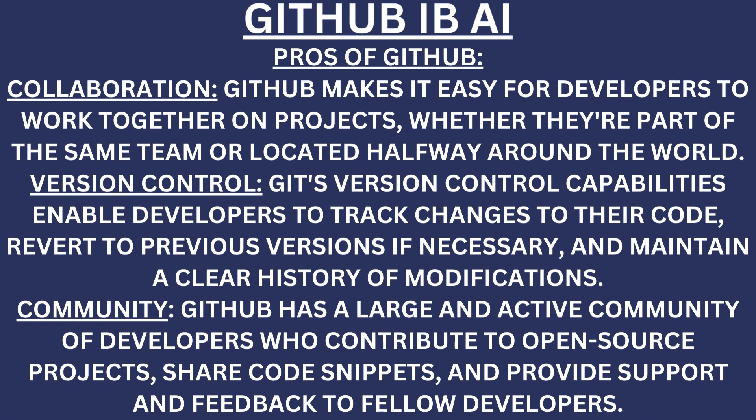Pros of GitHub — Collaboration: GitHub makes it easy for developers to work together on projects, whether they are part of the same team or located halfway around the world. Version control: Version control capabilities enable developers to track changes to their code, revert to previous versions if necessary, and maintain a clear history of modifications. Community: GitHub has a large and active community of developers who contribute to open source projects, share code snippets, and provide support and feedback to fellow developers.